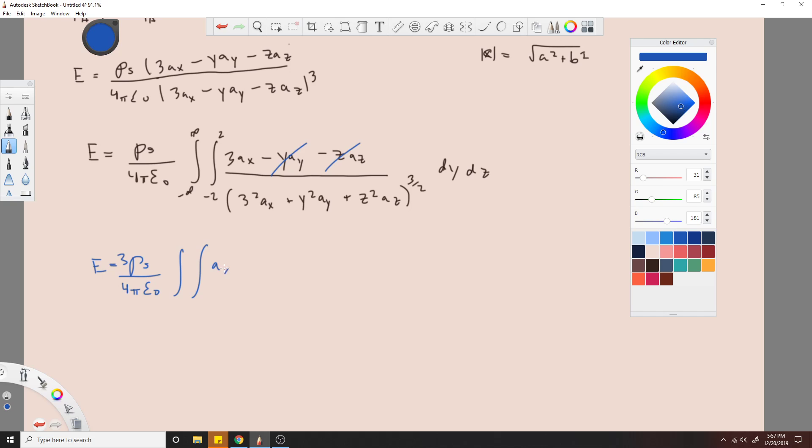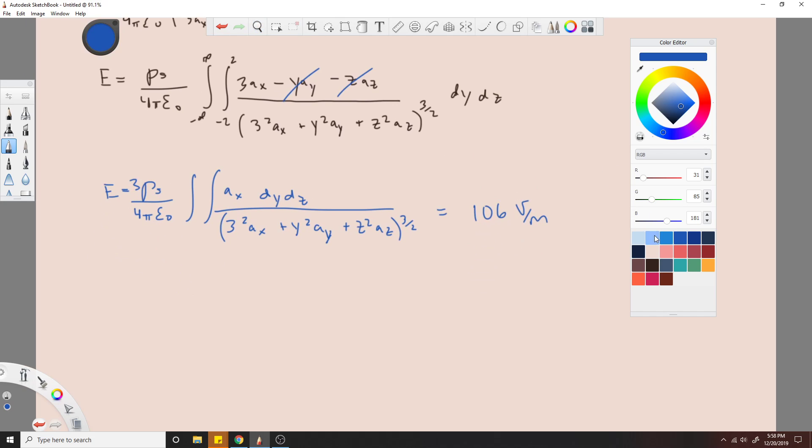You just end up with this, and then once you evaluate the integral, I'm not going to evaluate the integral because it's a pain, it looks pretty gnarly, but once you finish it you end up with 106 volts per meter. Now there's no more physics involved really, it'd just be a really tedious kind of integration. So let's move on to the next one.